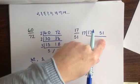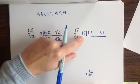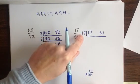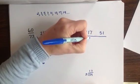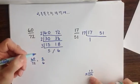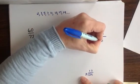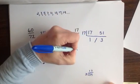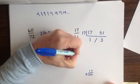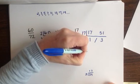17 fits into 17 one time. And according to my scratch work below, it fits into 51 three times. So the fraction 17 fifty-firsts is equivalent to 1 third.